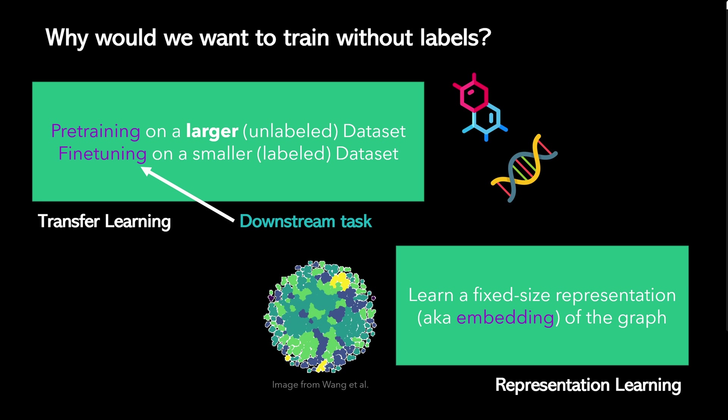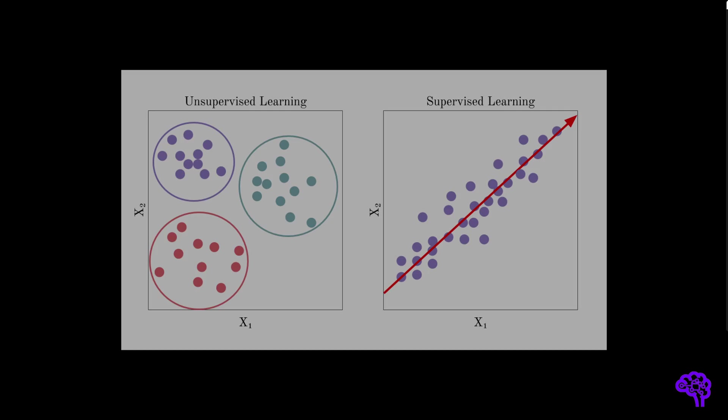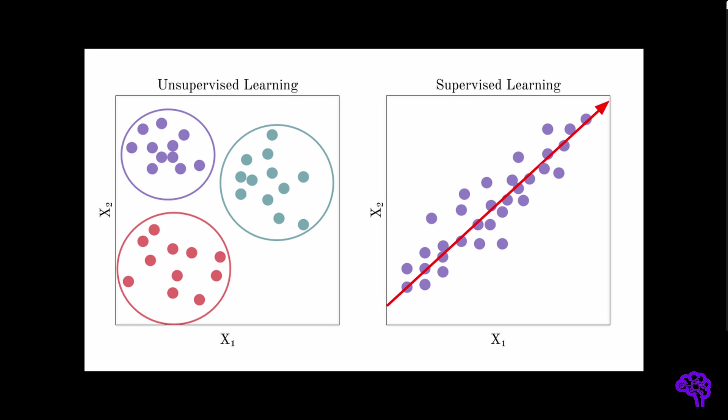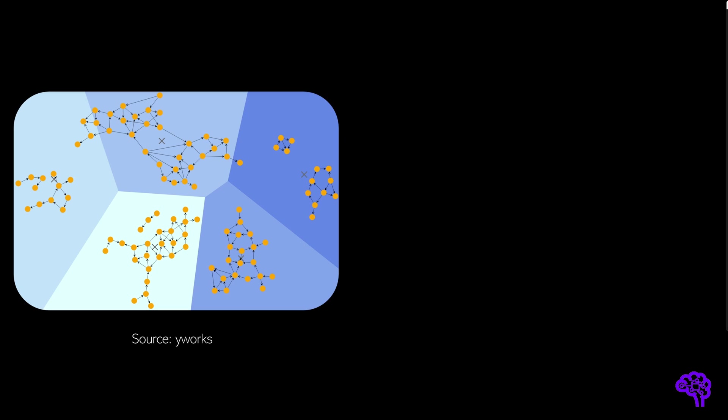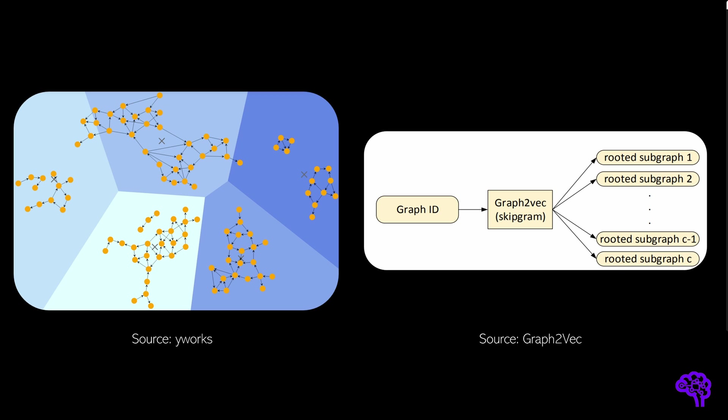Now that we know why unsupervised GNN training can be useful, let's have a look at how this can be done. Typically when we talk about unsupervised learning things like k-means clustering come immediately to our mind. These approaches of course also exist for graph data. For example, there is a k-means graph variant that partitions a graph into k clusters. Besides that there are also other popular methods like node2vec or graph2vec that also do unsupervised graph representation learning. The main difference is that these methods typically don't incorporate node or edge features and with GNNs we can sometimes learn more powerful representations. Therefore in this video I want to put the focus on unsupervised representation learning with GNNs.